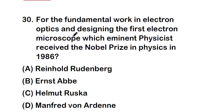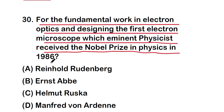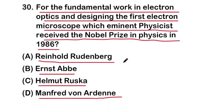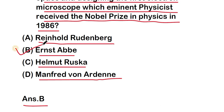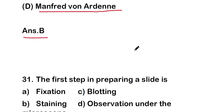Next question: for the fundamental work in electron optics and designing the first electron microscope, which eminent physicist received the Nobel Prize in Physics in 1986 — Reinhold Rüdenberg, Ernst Abbe, Helmut Ruska, or Manfred von Ardenne? The right answer given is option B, Ernst Abbe, who received the Nobel Prize in Physics in 1986 for this work.